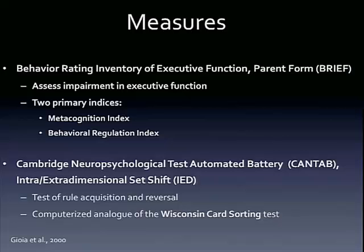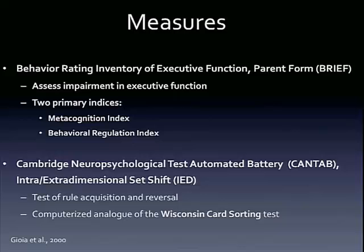The two measures we use for these analyses are the BRIEF — the Behavioral Rating Inventory of Executive Functioning — and we use the parent form, so I just want to emphasize that we used parent report measures. This measure has two primary indices: a metacognition index and a behavioral regulation index. The metacognition index, which taps more into the dorsolateral areas, includes things like initiation, working memory, planning, and organizing. The behavioral regulation index, which taps more into medial frontal and limbic areas, includes abilities like inhibitory control, set shifting, and emotional control.